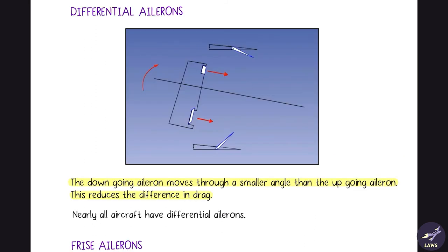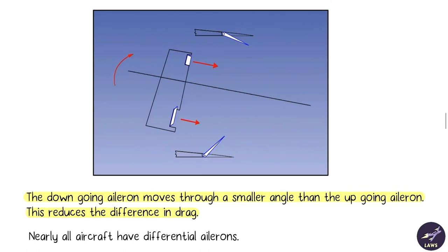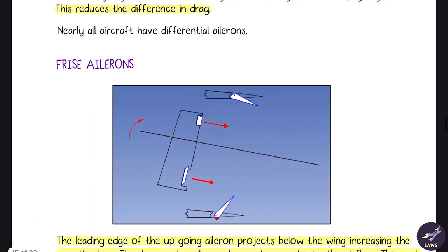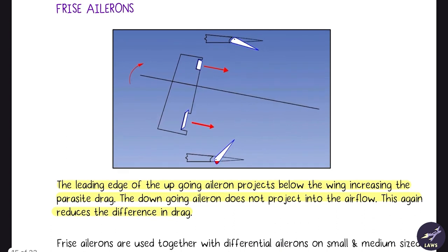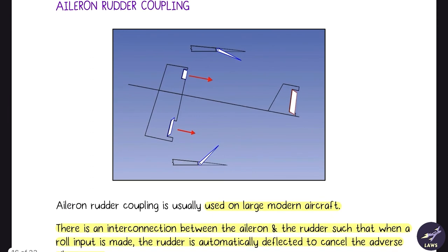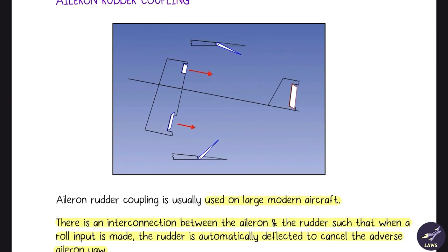There are different methods of reducing adverse aileron yaw. The first method is differential ailerons — matching the drag on both sides to eliminate adverse yaw. The down-going aileron is deflected to a lesser angle compared to the up-going aileron, reducing lift and induced drag on the up-going side, thereby equalizing drag on both sides. The other method is Frise ailerons, where the leading edge of the up-going aileron projects below the wing, increasing parasite drag and equalizing drag on both sides.